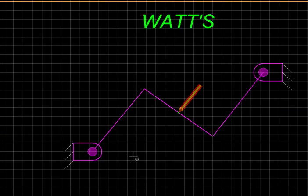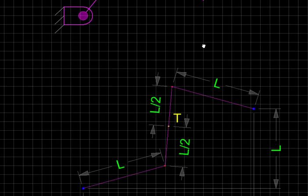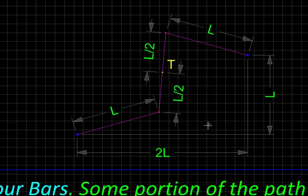The next one was invented by Watt himself and these are the proportions. Again a four bar: one, two, three and the fixed link four. L, L at the midpoint of which there is a tracer, L and then these two lengths.